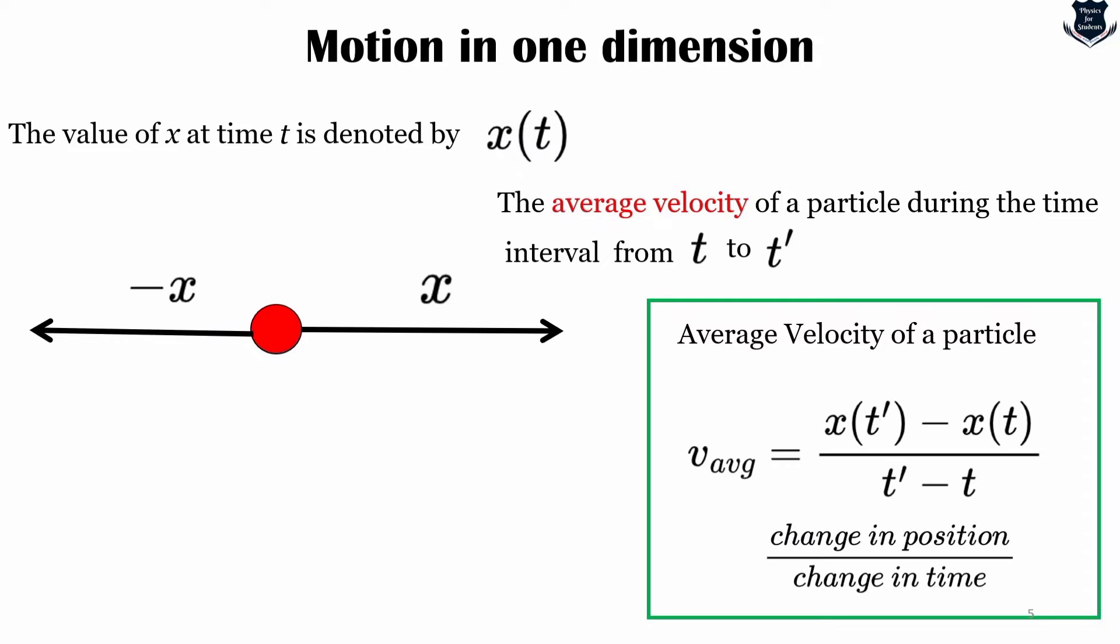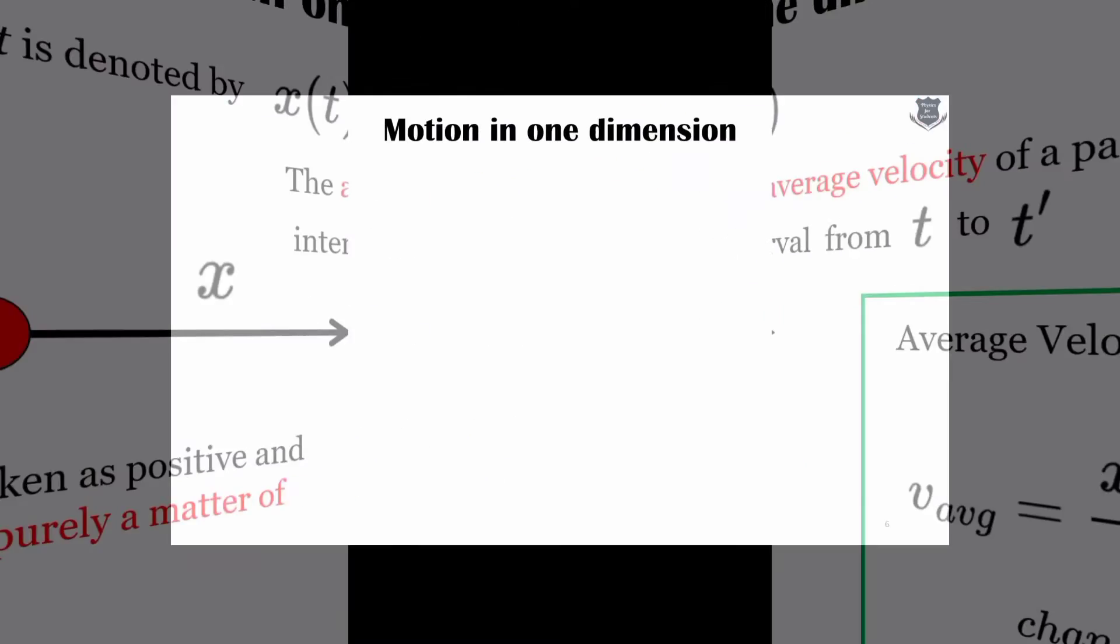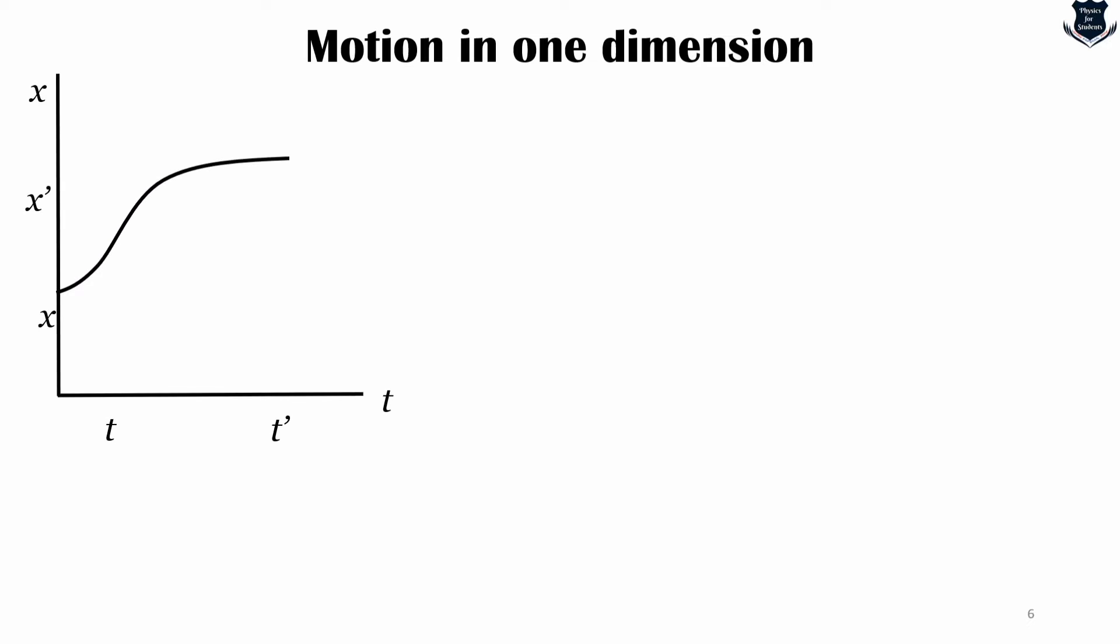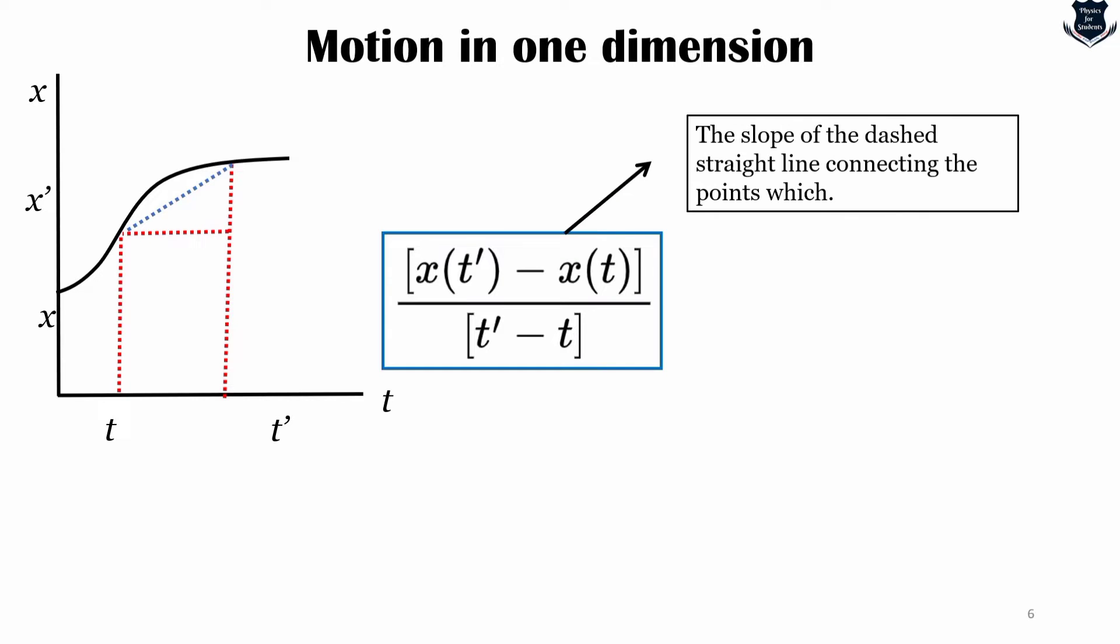For example, if we draw a graph of x versus t, we see that x(t prime) minus x(t) upon t prime minus t is just the slope of the dashed straight line which is connecting the points which represent the position of the particle at times t prime and t.